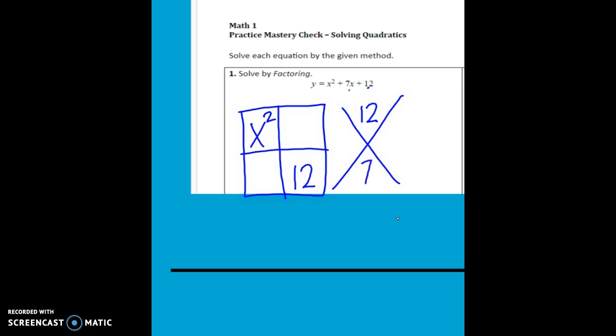I'm sorry, the middle number goes to the bottom. So now we're going to find two numbers that add or subtract to 7 that also multiply to 12.